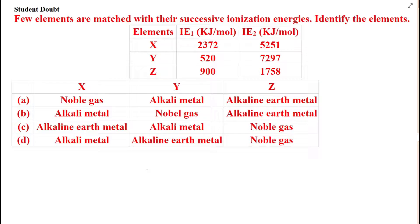This is a student doubt. Let's read the statement first. Few elements are matched with their successive ionization energies. Identify the elements. You are having three elements X, Y, and Z and they have given you the ionization energy one and ionization energy two of these elements. You have to find out these respective elements in the options, which option belongs to which element.